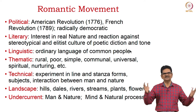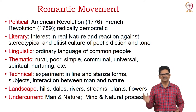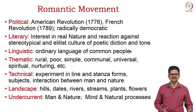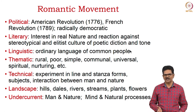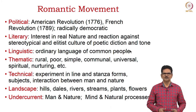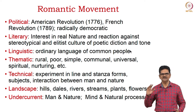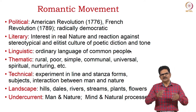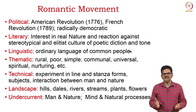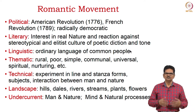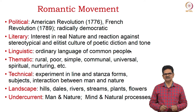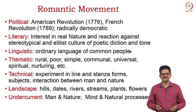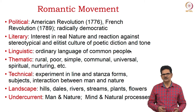The Romantic movement has several dimensions: political, literary, linguistic, thematic, technical, landscape, and one idea called undercurrent. Politically, the American Revolution in 1776 and the French Revolution in 1789 created a climate where there was a desire for a radically democratic society. In literature, poets took interest in nature and reacted against the stereotypical and elitist culture of poetic diction and tone of the previous era.